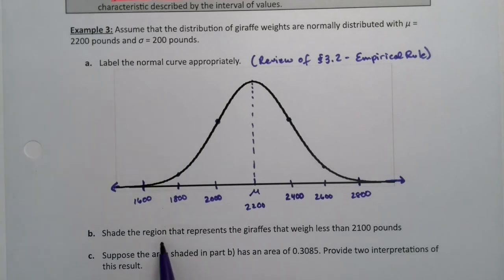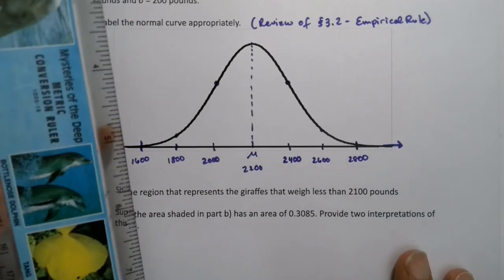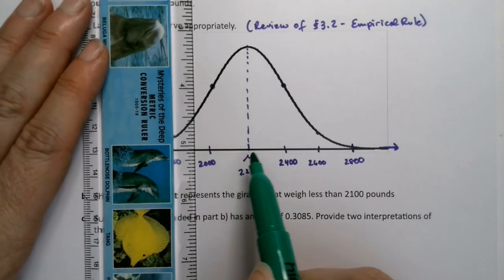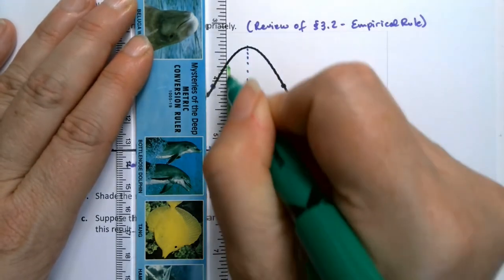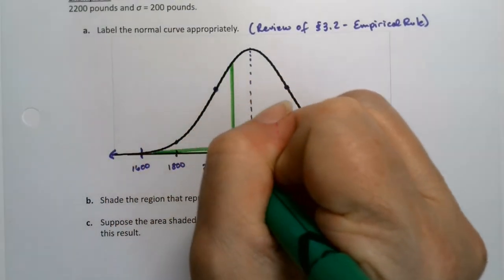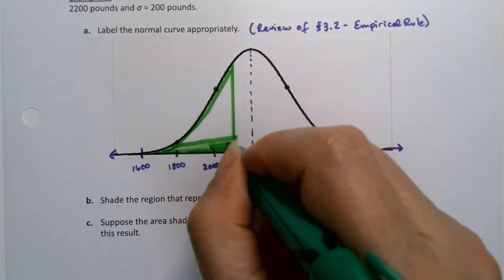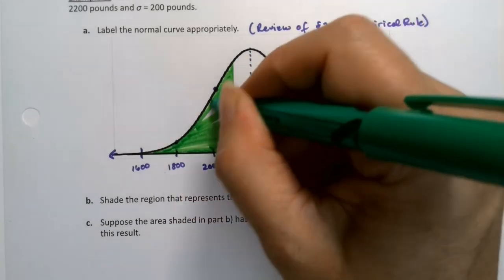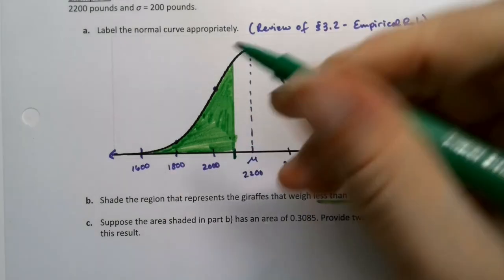Now I want to shade the region that represents giraffes that weigh 2,100 pounds or less. I'll do that in green. Here's 2,000 and here's 2,200 — 2,100 is exactly halfway between the two. I'll use my ruler and draw a vertical line at 2,100 pounds. If I want less than 2,100, I'm going to shade to the left. So this shaded region represents less than 2,100 pounds, and the vertical line mark is at 2,100.